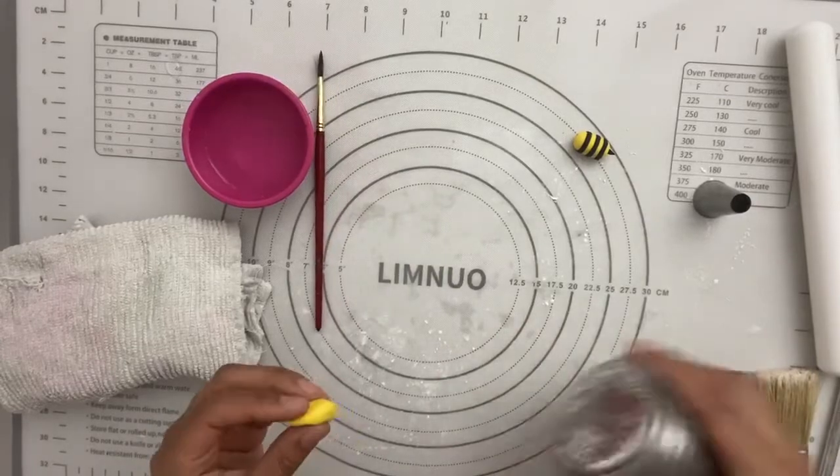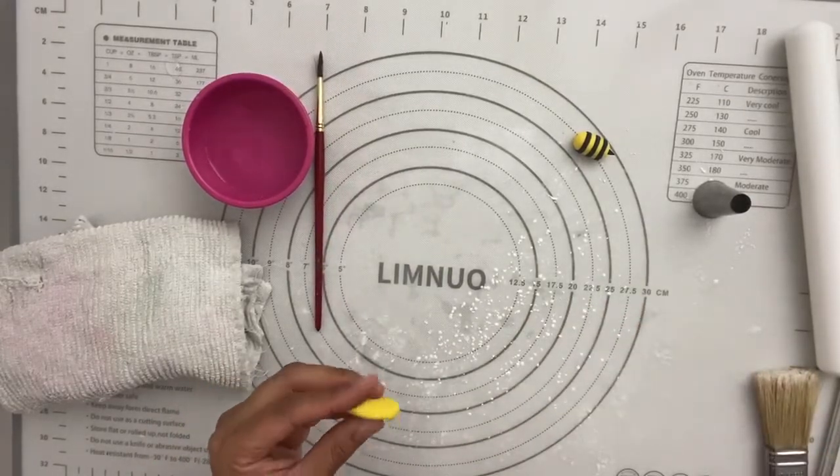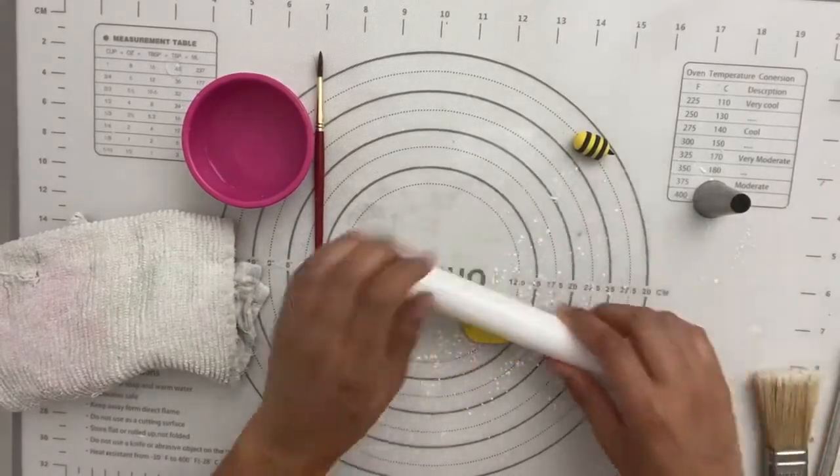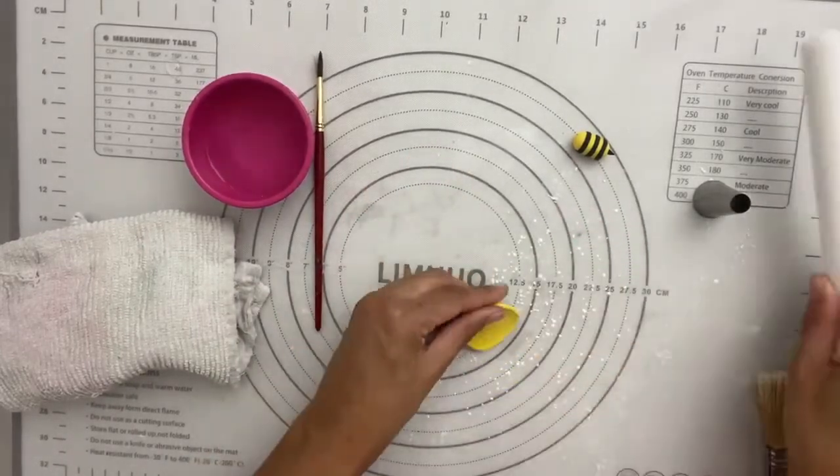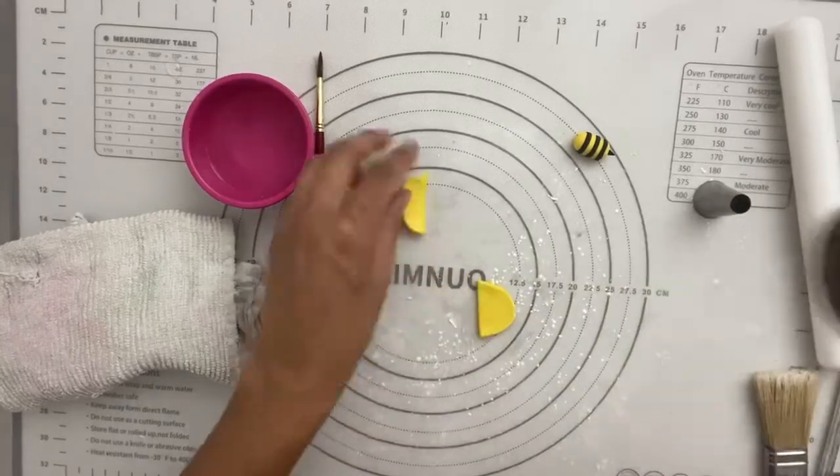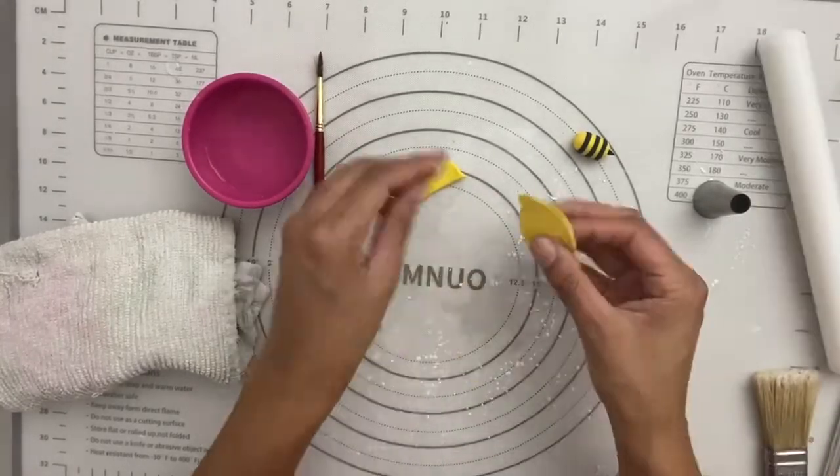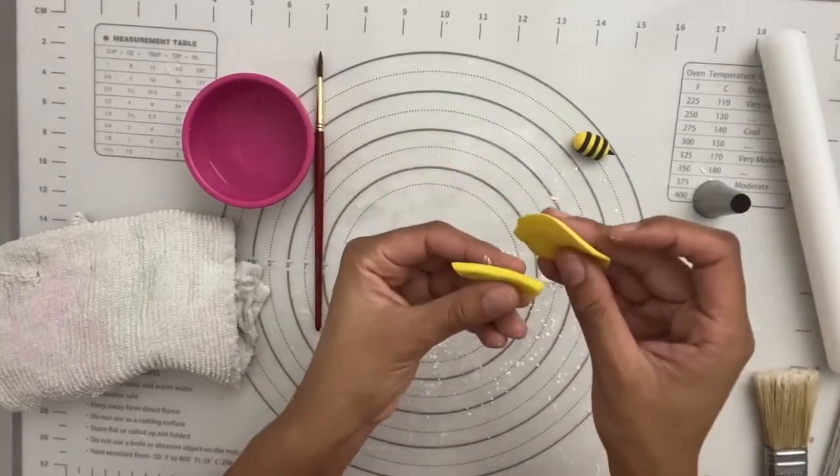So for the second method, which is to have the stripes flush and not laid over the body, I'm just going to start by rolling a little piece of yellow fondant. I'm going to cut a little bit off. And then I'm going to roll the second piece just a little thinner than that one. So you can see one's thicker and one's thinner.